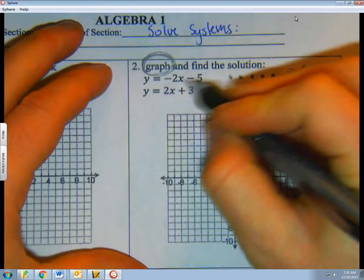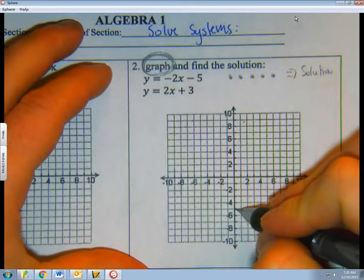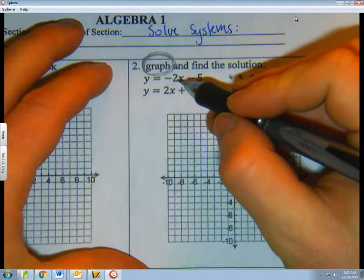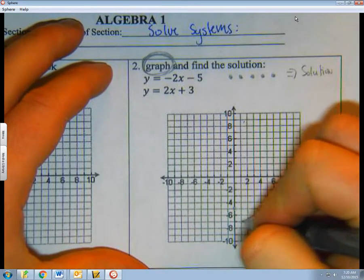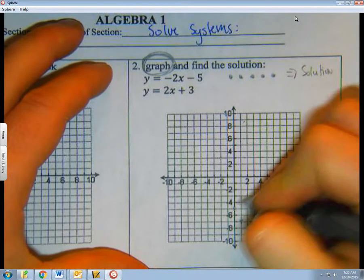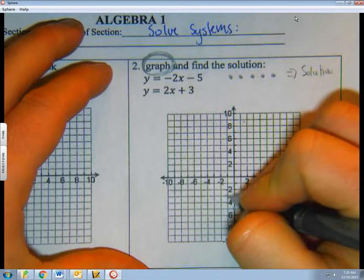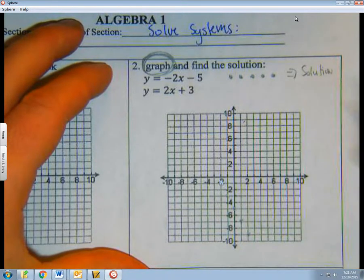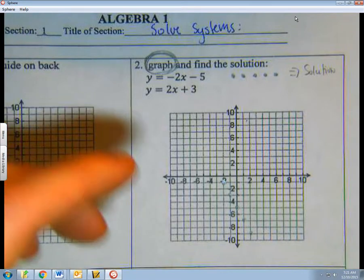So I'm going to graph this guy minus 5, and then minus 2x is down 2 and over 1, down 2 and over 1, and then up 2 and back 1, up 2 and back 1. I'm just going to leave that alone for now.